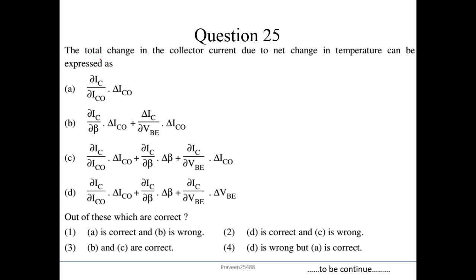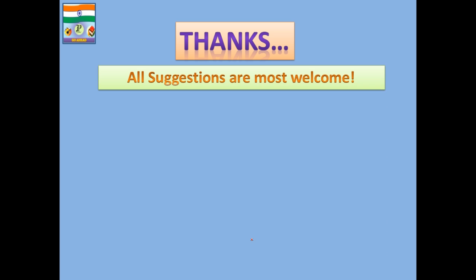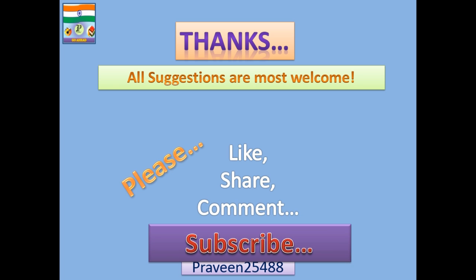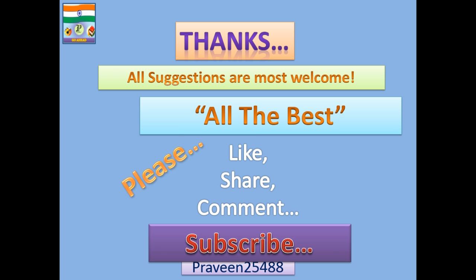Question number 25. The total change in collector current due to net change in temperature is expressed as: ΔIc = (∂Ic/∂Ic0)·ΔIc0 + (∂Ic/∂β)·Δβ + (∂Ic/∂VBE)·ΔVBE. D is the correct expression and C is wrong. Option 2 is the correct answer. That's all for this video; we will continue in the next video. Thanks for your attention. Please like, share, comment, and subscribe to the channel Praveen25488 for more useful videos.